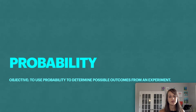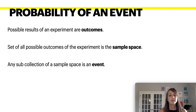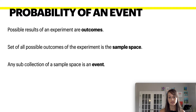In this video, I'm going to be explaining probability and how to use probability to determine possible outcomes from an experiment. The probability of an event — there are three terms you need to know. The possible results of an experiment are considered the outcome. The set of all possible outcomes is the sample space, and any sub-collection of that sample space is an event.